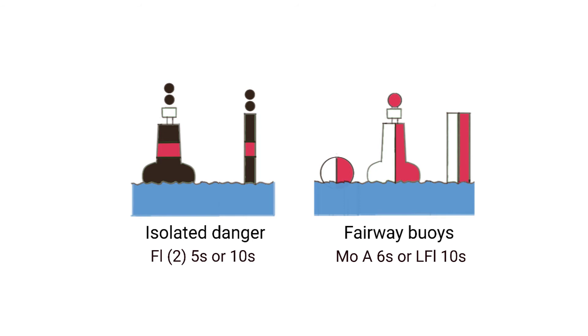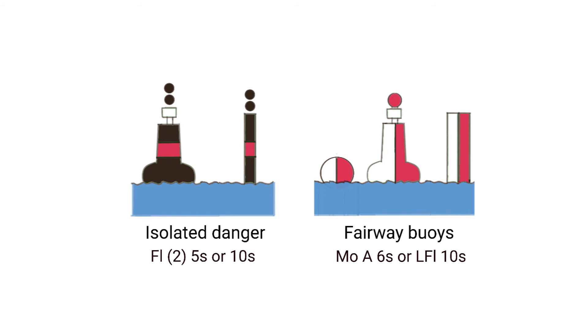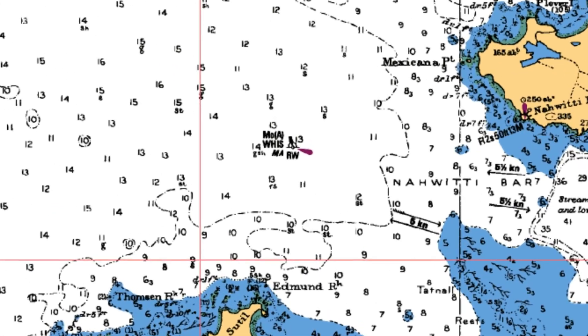Then there is a fairway marker. Think of it as a traffic lane marker. Generally keep to the right. It may have a red ball at the top, and its colors are white and red. If it has a light, it'll be a white light flashing a Morse code A dot dash, or it'll be a long flash every ten seconds. Here's an example at the north end of Vancouver Island.